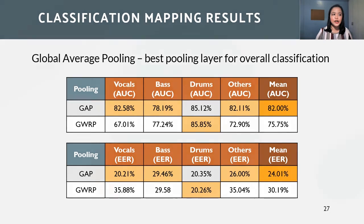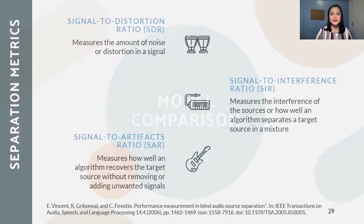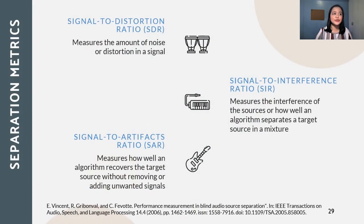We now move to our model comparison. Three metrics were used to evaluate the separation performance. First is the SDR, or the signal-to-distortion ratio, which measures the amount of noise in a signal. Then we have the SIR, or the signal-to-interference ratio, which measures how well an algorithm separates a target source in a mixture. And SAR, or the signal-to-artifacts ratio, which measures how well an algorithm recovers the target source without removing or adding unwanted signals.